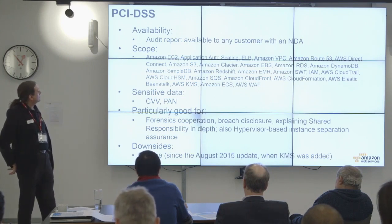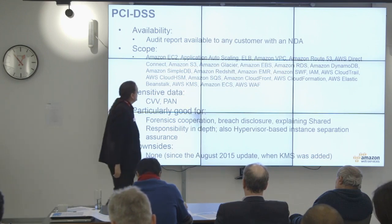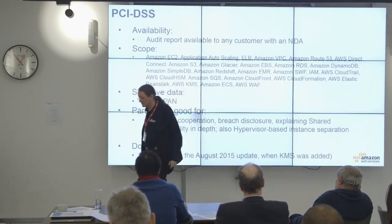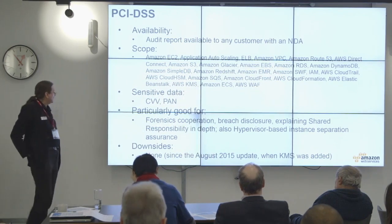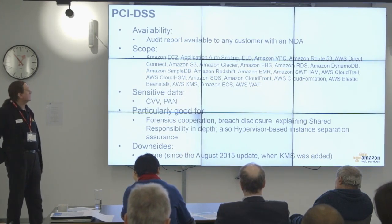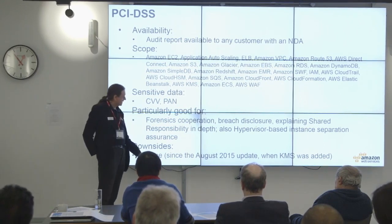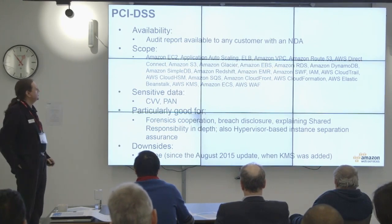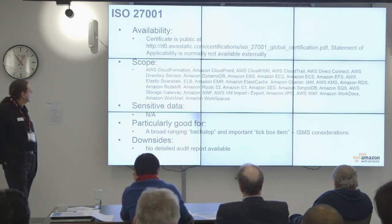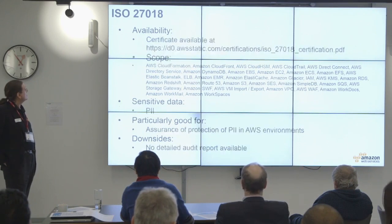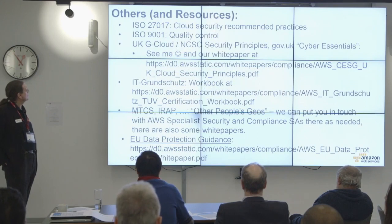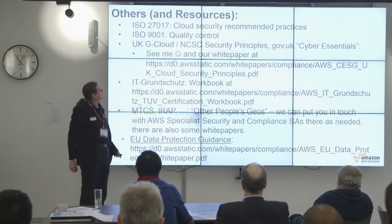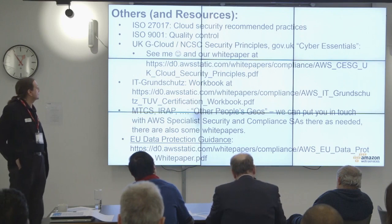We've been adding to our PCI certification recently, so we now have our web application firewall and our Docker management service, ECS, in there. The thing that made life a lot easier for PCI is that a while ago we put our crypto services in there too — actually doing crypto for PCI was a bit entertaining before that point. ISO 27001 is what it is; 27018 and 27017 are also there. And this is where you'll find our NCSC Cloud Security Principles white paper.